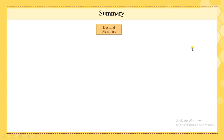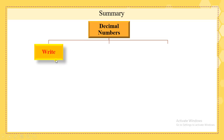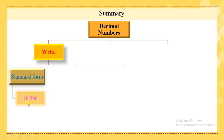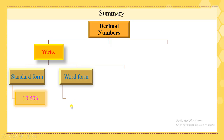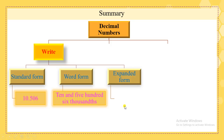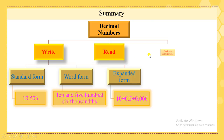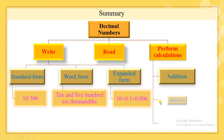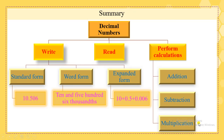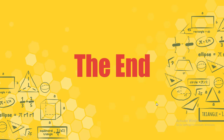As a summary, in chapter 2 decimal numbers we have covered: how to write a decimal number in standard form such as 10.506, and in expanded form such as 10 plus 0.5 plus 0.006. We also learned how to read decimal numbers and how to perform calculations including addition, subtraction, and multiplication. Thank you for following.